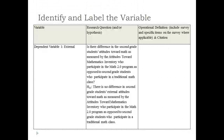Now let's talk about you identifying the variables in your study. I often find it helpful to create a chart to identify the variables in a research question. My chart usually has three separate columns: one where I identify and label the variable, one where I list the research question and/or hypotheses, and one for operational definitions. An example research question: Is there a difference in second grade students' attitudes toward math as measured by the attitude toward mathematics inventory, who participate in the Math 2.0 program as opposed to second grade students who participate in a traditional math program?